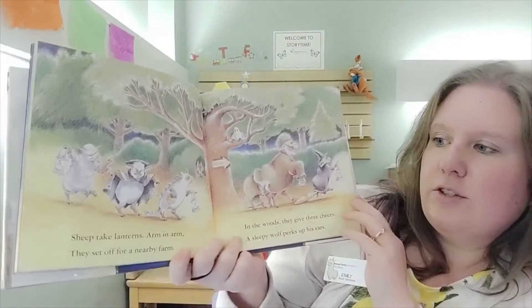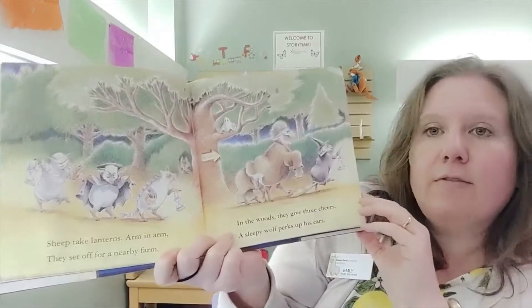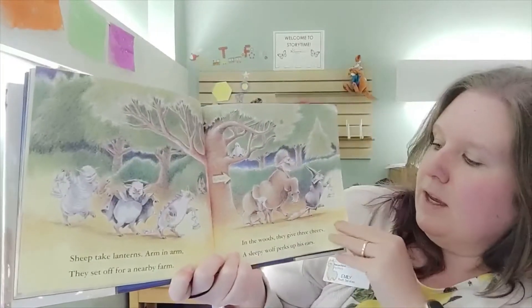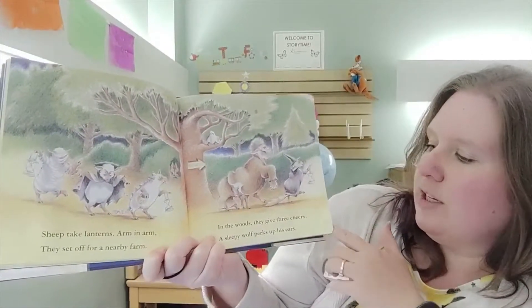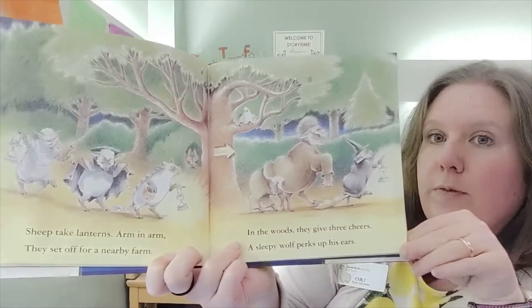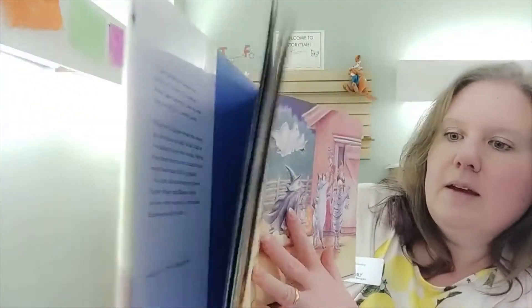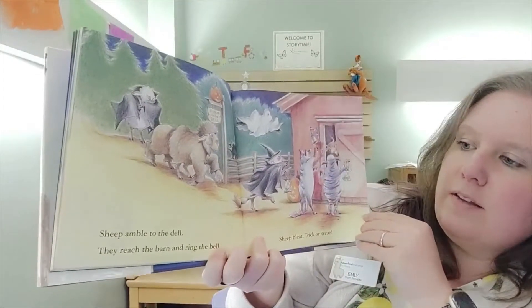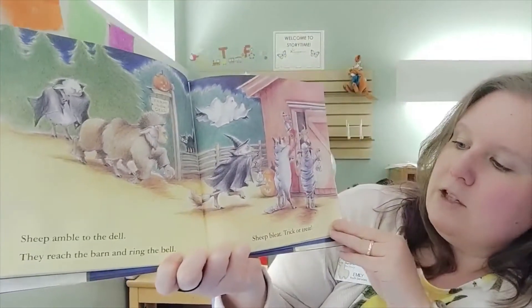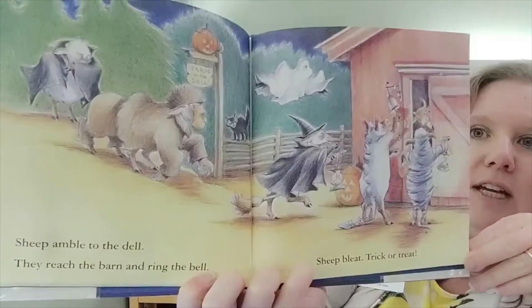Sheep take lanterns arm in arm. They set off for a nearby farm. In the woods they give three cheers. A sleepy wolf puts up his ears. Sheep amble to the dell. They reach the barn and ring the bell.